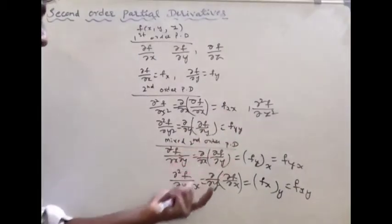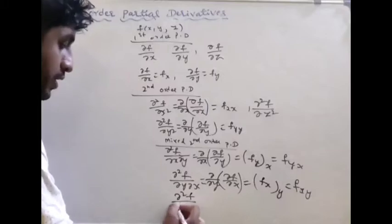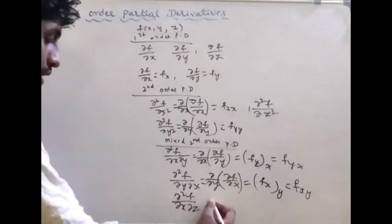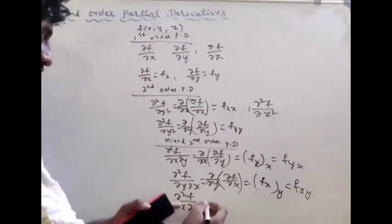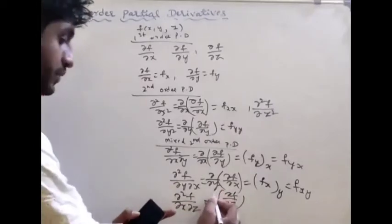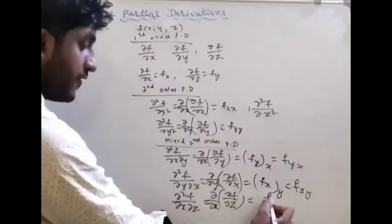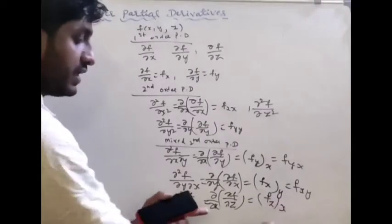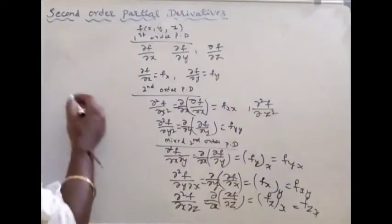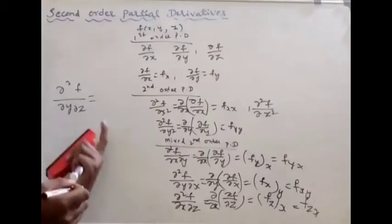Then the mixed partial is dou square f by dou x dou y. Here, dou square f by dou x dou y means: first with respect to z, then with respect to x. Then another mixed partial is dou square f by dou y dou z.